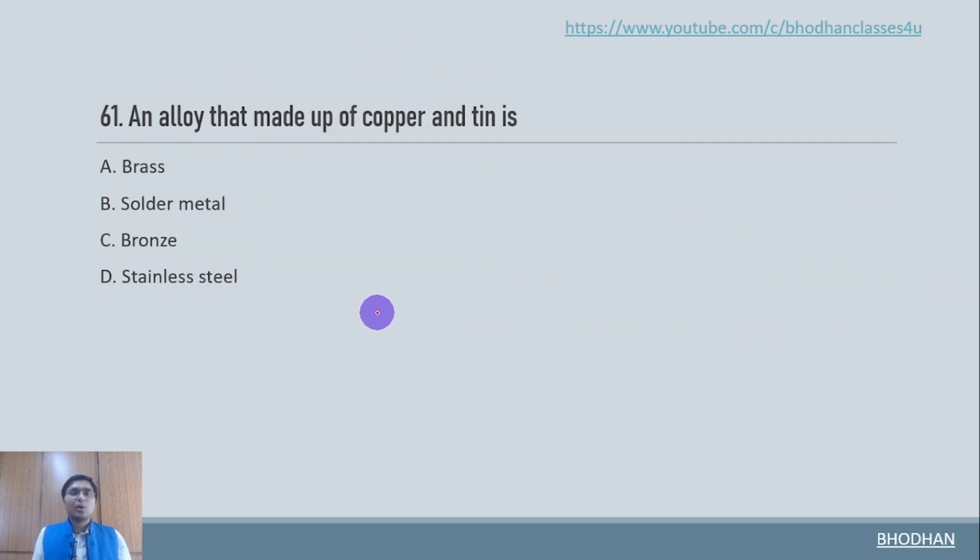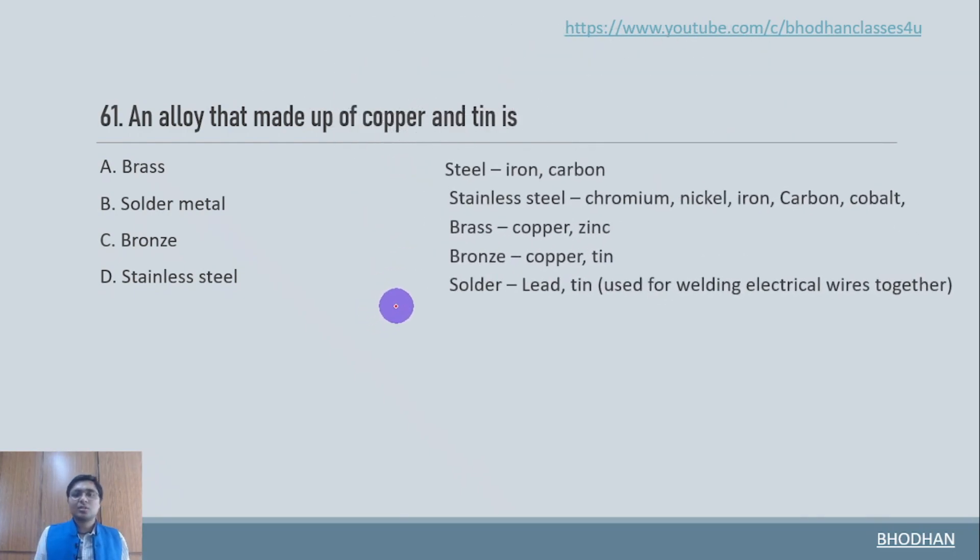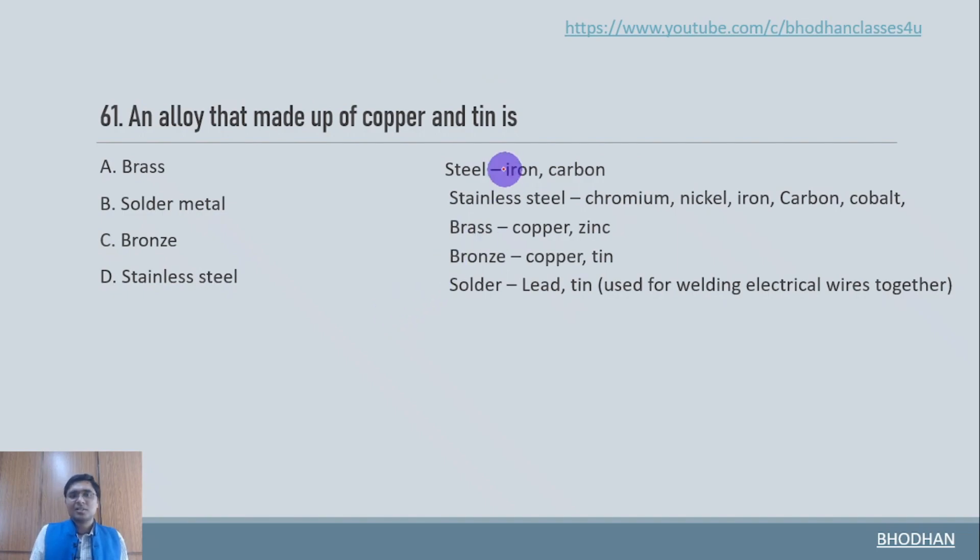An alloy that is made up of copper and tin. Now here are some of the alloys which are there in your syllabus. Steel is basically made up of iron and carbon. And similarly if you see bronze is basically copper and tin together. So now here the option is C.